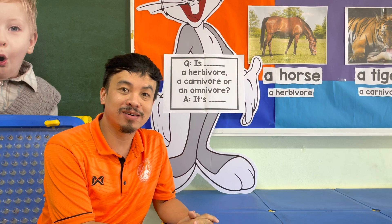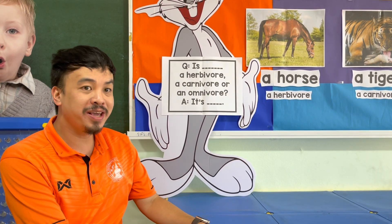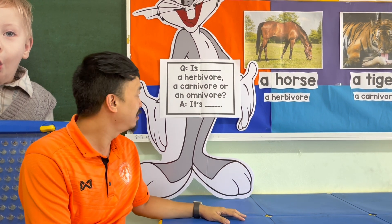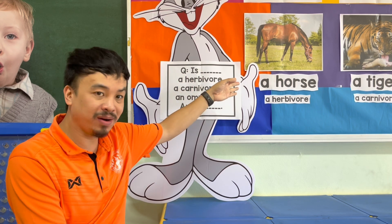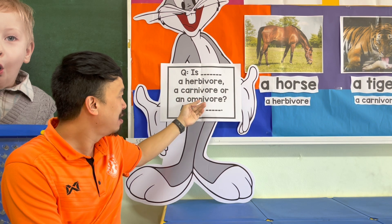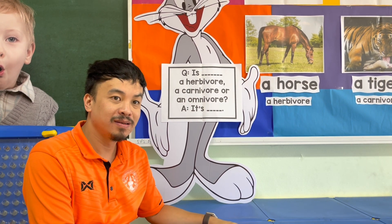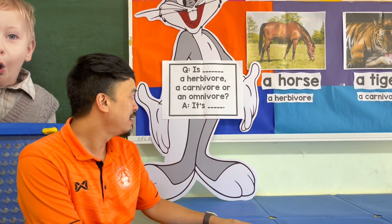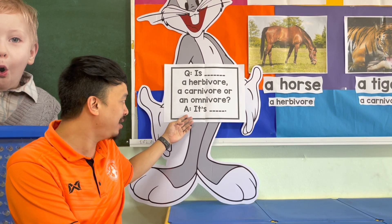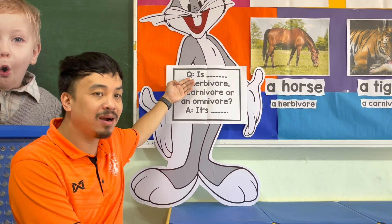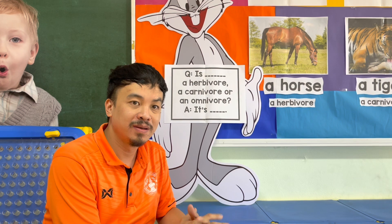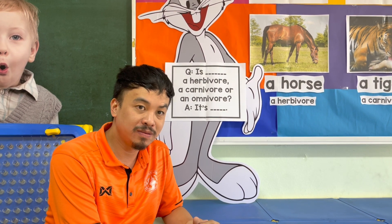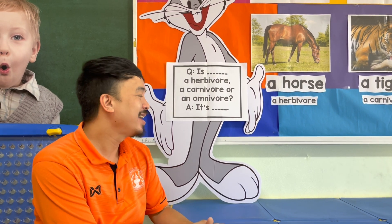Now it's time for us to talk. Let's have our structure. The question is: is [animal name] a herbivore, a carnivore, or an omnivore? For example: Is a horse a herbivore, a carnivore, or an omnivore? Very good — the answer is: it's a herbivore.